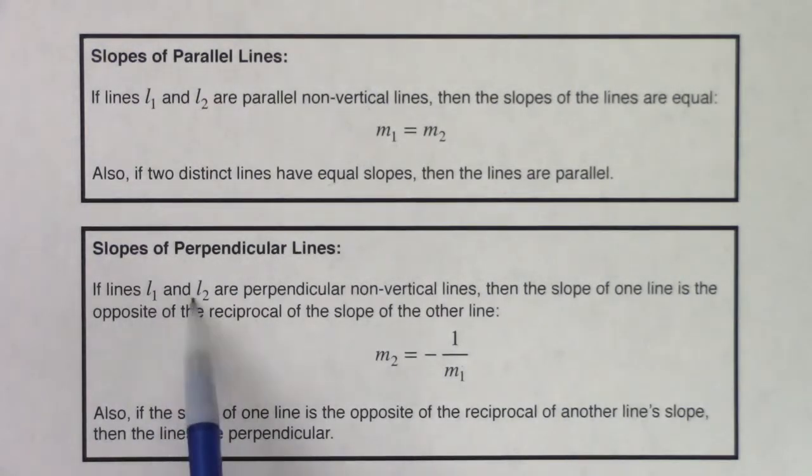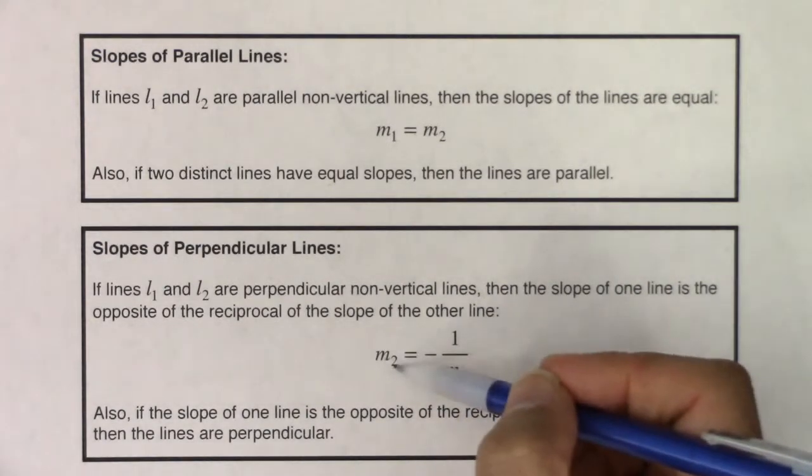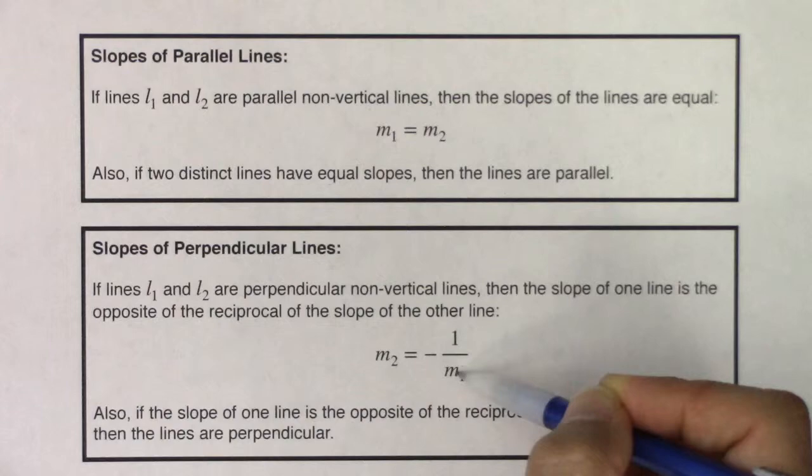If lines L1 and L2 are perpendicular non-vertical lines, then the slope of one line is the opposite of the reciprocal of the slope of the other line. Okay, so M sub 2 would be equal to negative 1 over M sub 1.